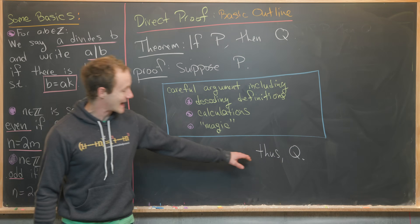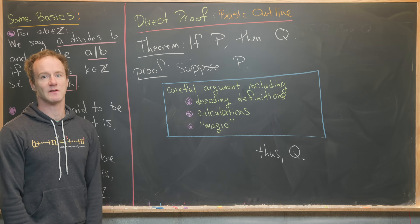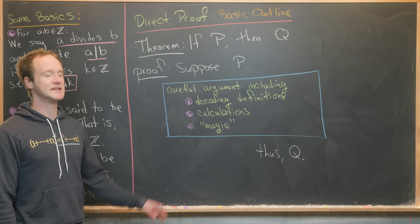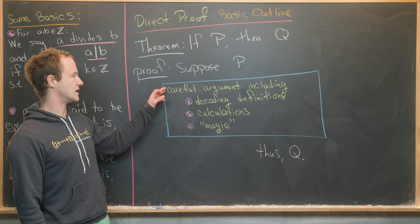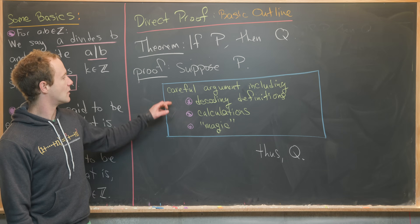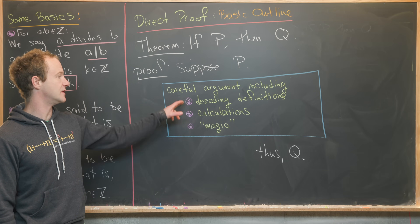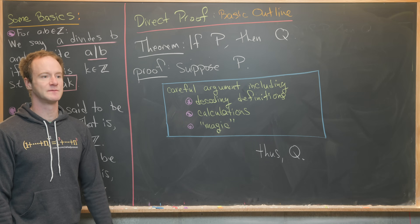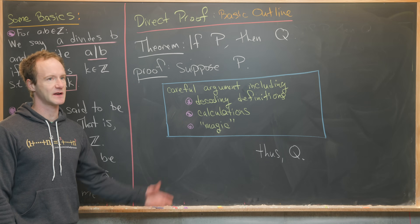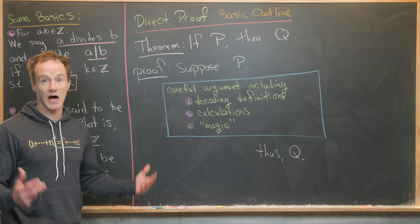All proofs using this direct proof method follow a general outline. Your first line should be something like 'suppose P,' and your last line should be something like 'thus Q' or 'therefore Q.' Everything in the middle bridges the logical gap from P to Q — it's a careful argument that could include decoding some definitions, like continuity and differentiability from our example.